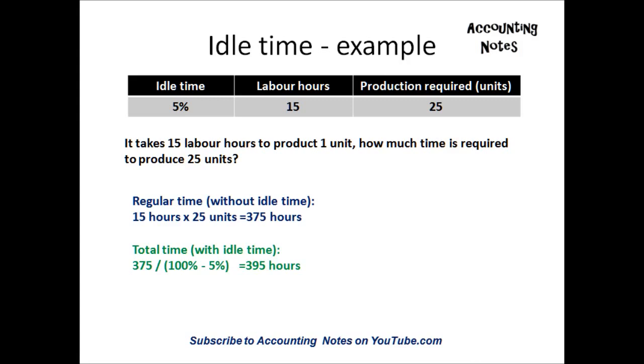First step is to calculate the regular time that excludes the idle time. To calculate the regular time, what we would do is take the 15 labor hours and multiply with the 25 units that are required for production. So 15 times 25 units equals 375 hours to produce 25 units without the idle time.